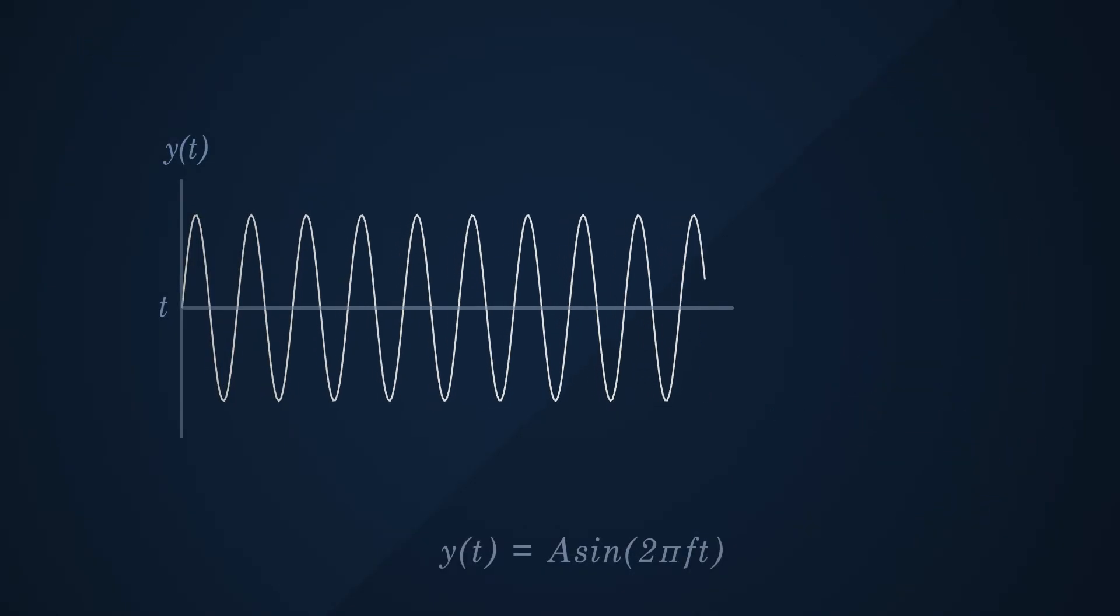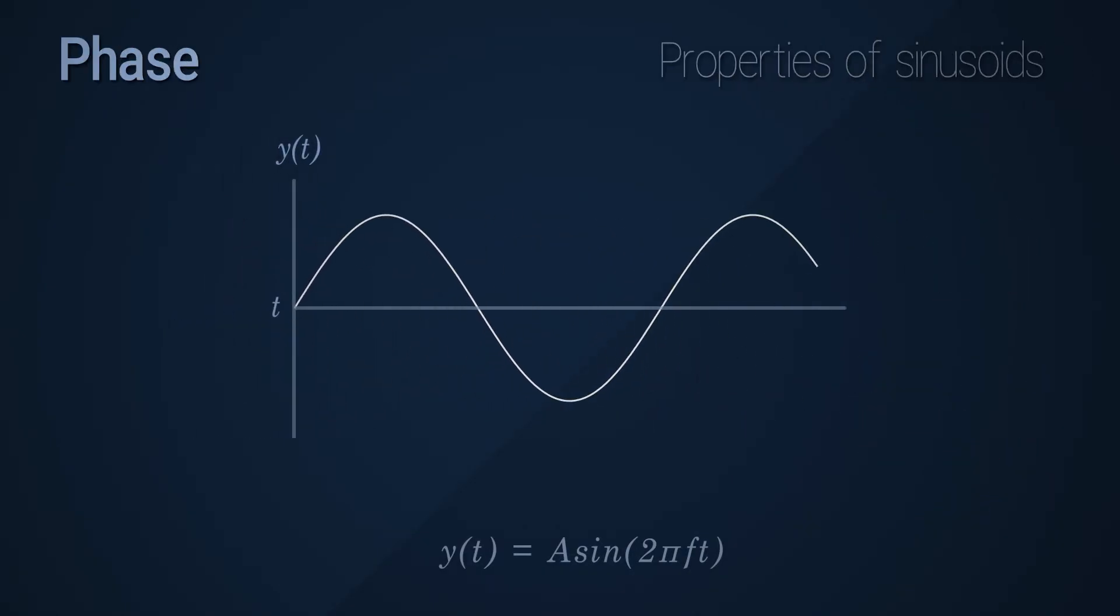And then we have the final property that I'd like to discuss, which is phase. In the previous video, I mentioned that the sine and cosine waves are quite similar to each other, except for the fact that they were offset from each other.